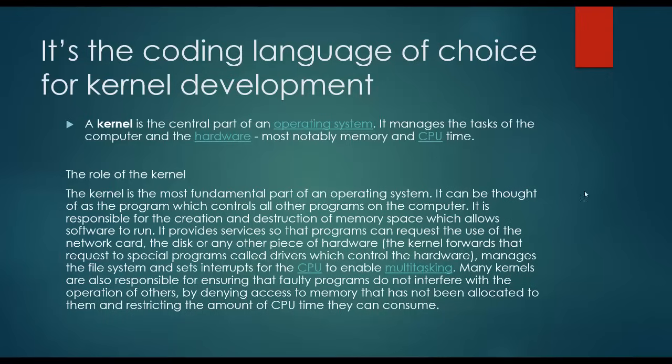Alright. It's the coding language of choice for kernel development. So a kernel is a central part of the operating system. It manages the task of a computer and hardware, most notably memory and CPU time. So basically, it's the most fundamental part of the operating system, and it controls all other parts of the programs on the computer. So if you need something that needs to be fast, like operating systems or anything like that, that needs to have very close access to hardware on your machine, then C is going to be one of the first languages that you choose to do something like that.